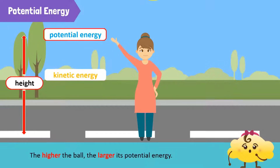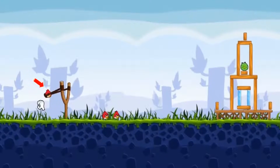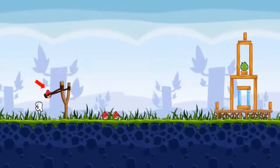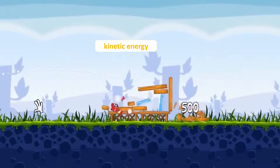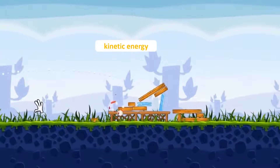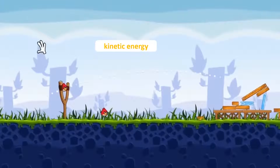That is why, if we raise the ball to a greater distance from the ground and release it, it will hit the ground harder. Let's look at another example. Look at the slingshot. It has stored energy with which it can throw the bird up to a certain distance. Based on its position in the slingshot, we can say the bird has potential energy. As soon as it's released from the slingshot, it gains kinetic energy, and because of kinetic energy, it is able to apply force on the little houses to break them down.